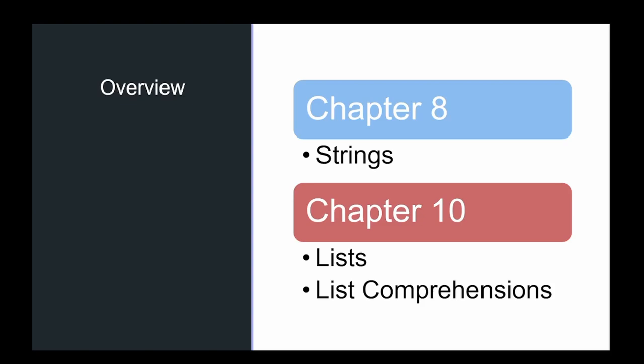To wrap up, we started in chapter eight discussing strings and all the different ways we can work with them. Then we moved on to chapter ten and saw a lot of the similarities between lists and strings. We wrapped up with manipulations of lists like slicing, deleting, joining, and things like that. I hope you enjoyed this lecture and we will see you in lecture five.